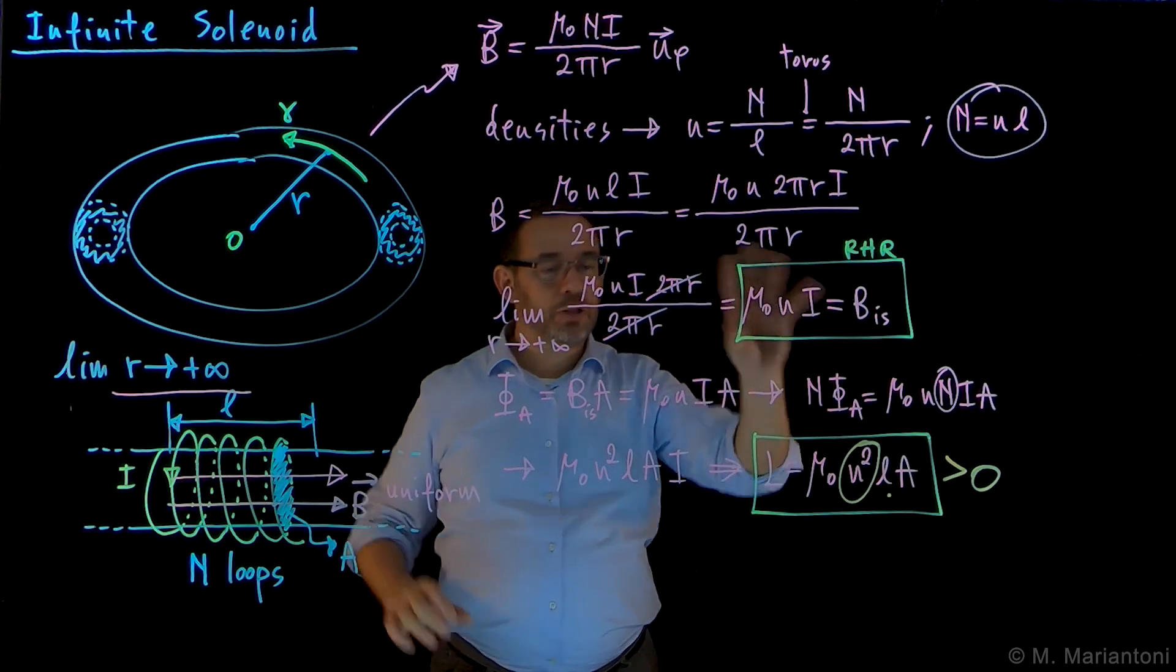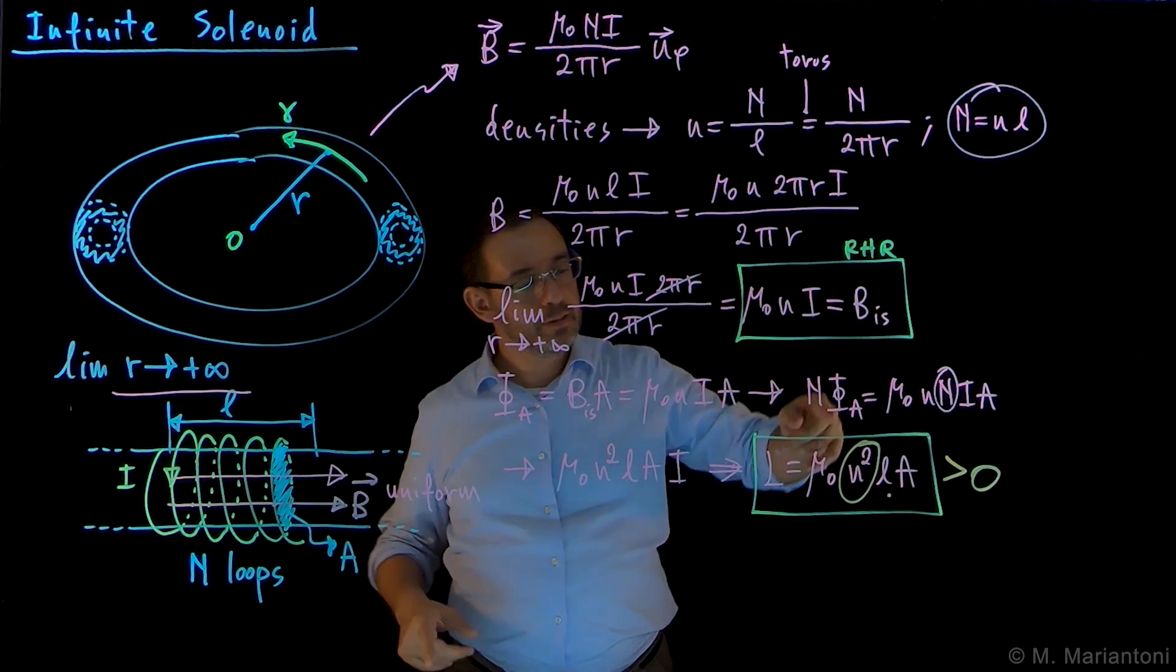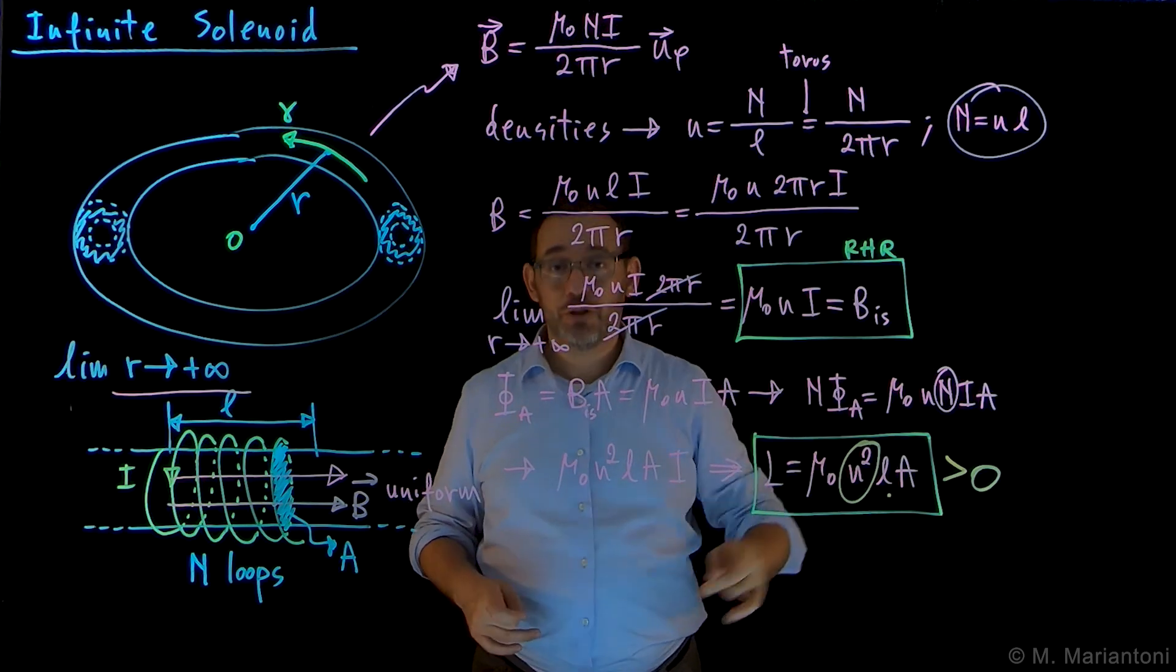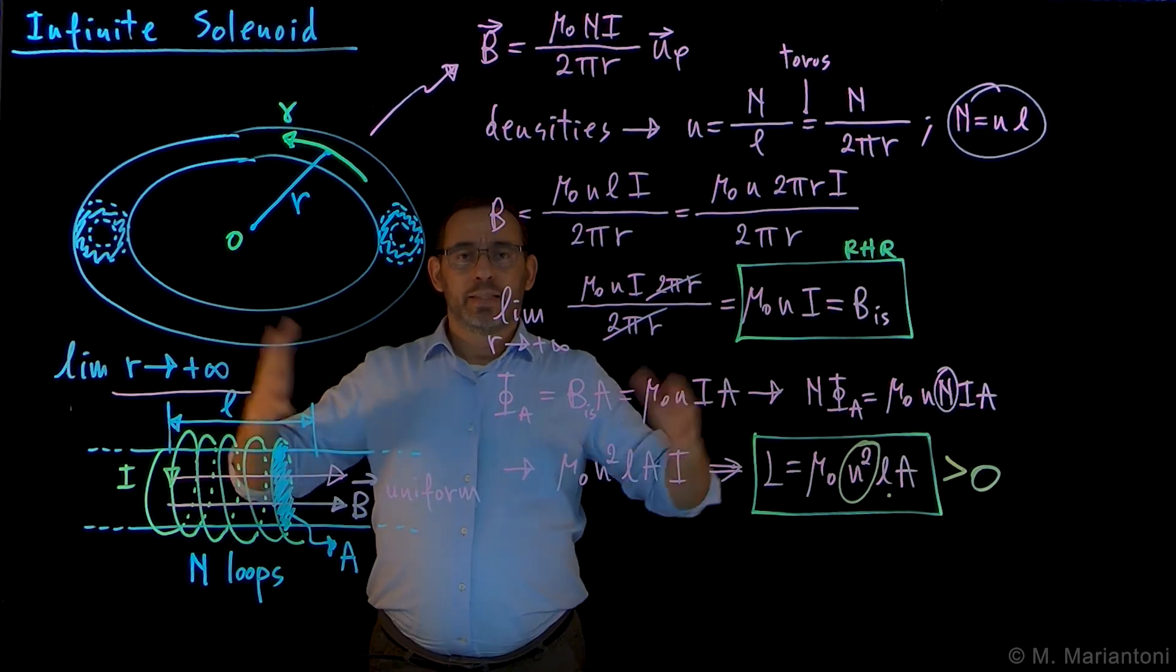the uniform magnetic field right-hand rule, uniform inside the infinite solenoid, which allows us to find the flux and the inductance of this infinite solenoid, which is n squared L A, larger than zero.